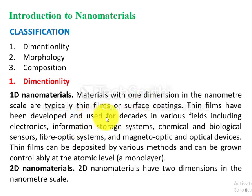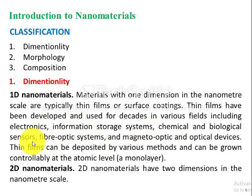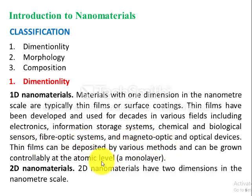Thin films have been developed and used for decades in various fields including electronics, information storage systems, chemical and biological sensors, fiber optic systems, and magneto-optic and optical devices. Thin films can be deposited by various methods and can be grown and controlled at the atomic level — even a single monolayer, meaning one layer of atoms, can be deposited on the surface of a material.